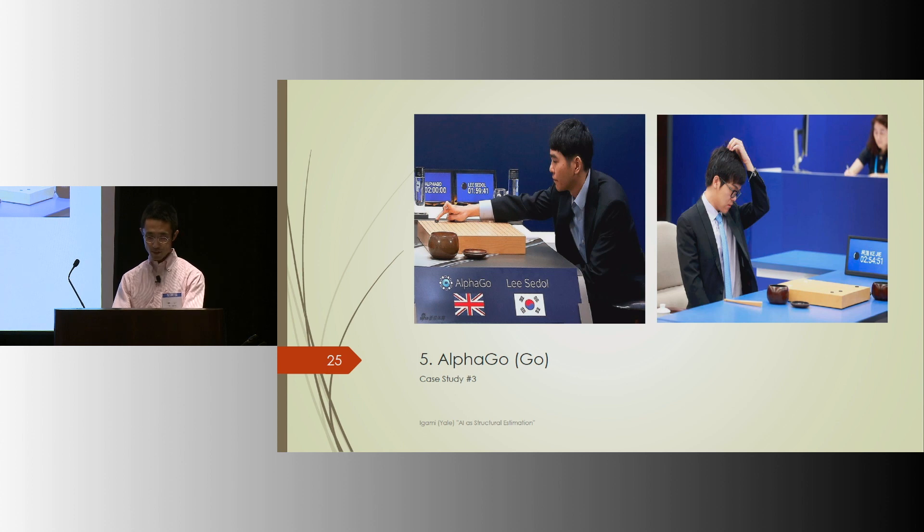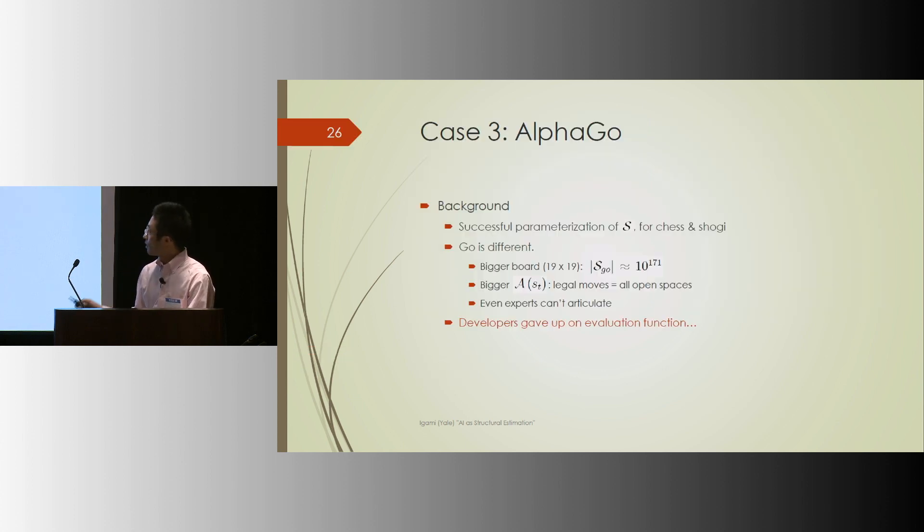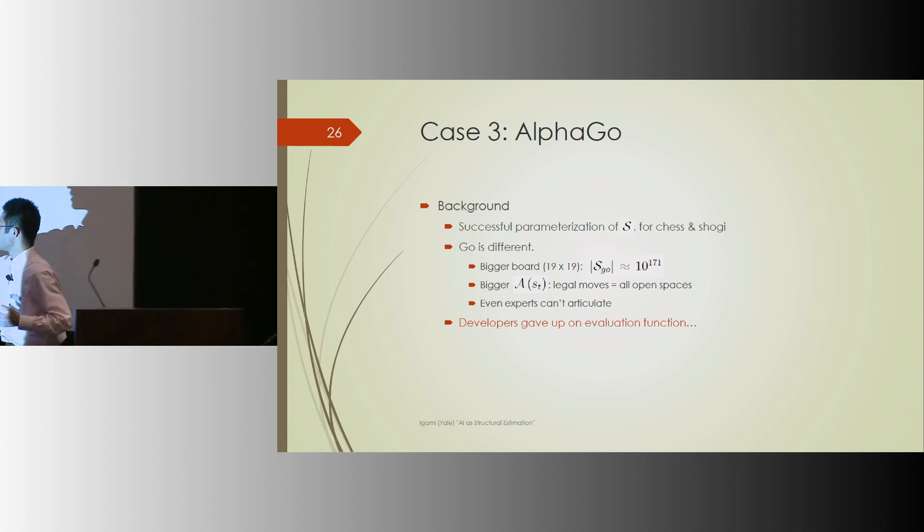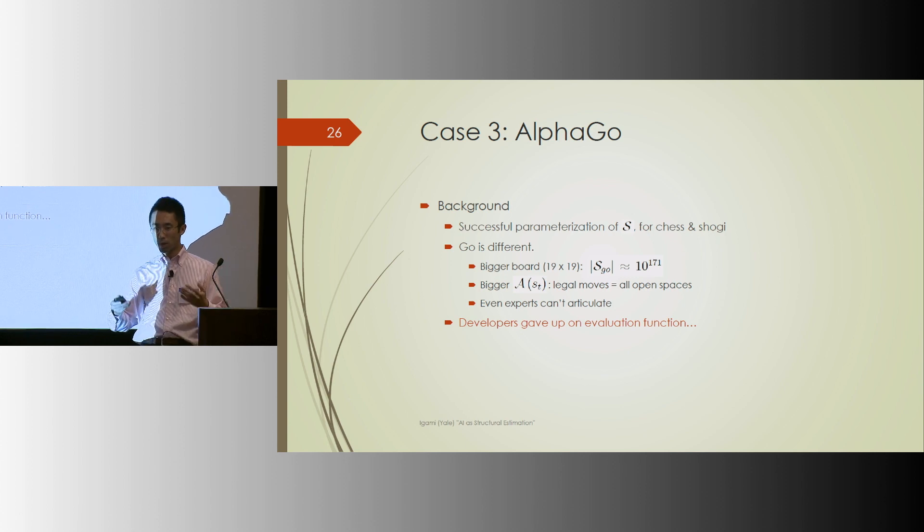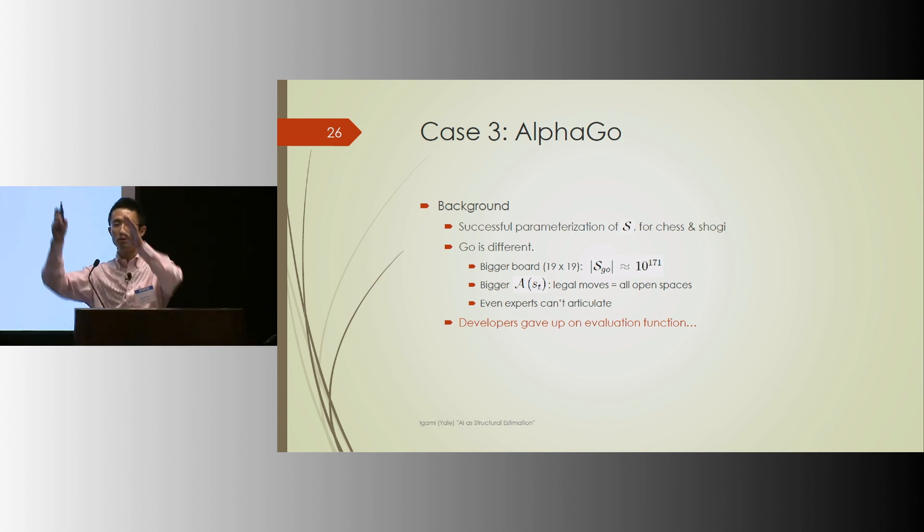Case study number three, now Go. A little bit of background before we get to AlphaGo. The AIs for chess and Shogi came up with some nice parameterization of the state space, script S. But doing so for Go was pretty difficult because, well, the board is bigger. There are more legal moves. But the worst part is, experts couldn't really articulate what makes good states good. Like, they talk about beautiful patterns, or like cloudy patterns, or something like that. That means you can't codify that. So developers gave up on the construction of the evaluation function or parameterization of state space about 12 years ago.